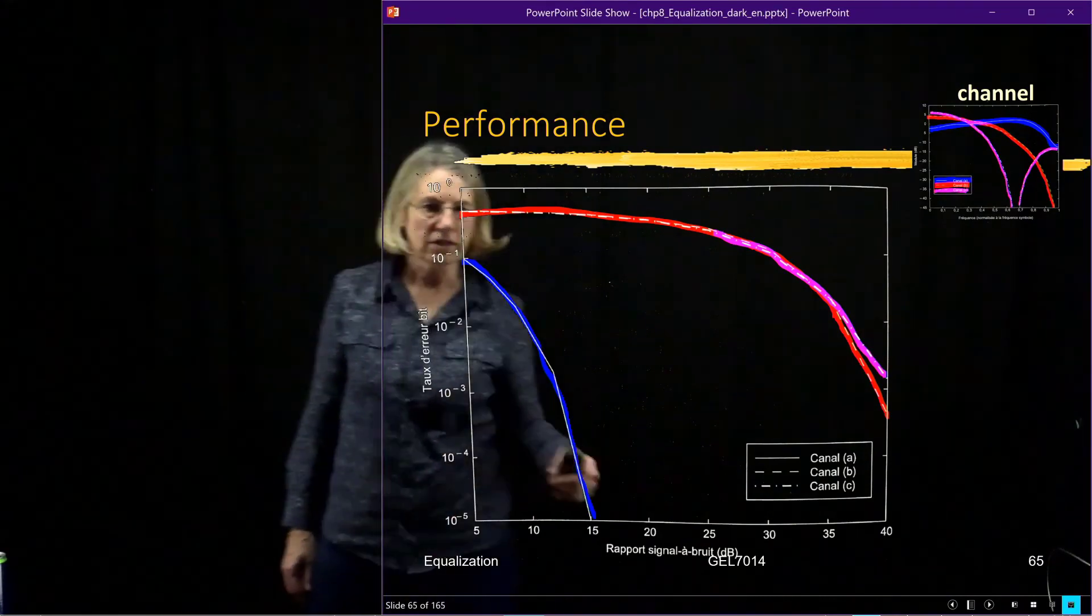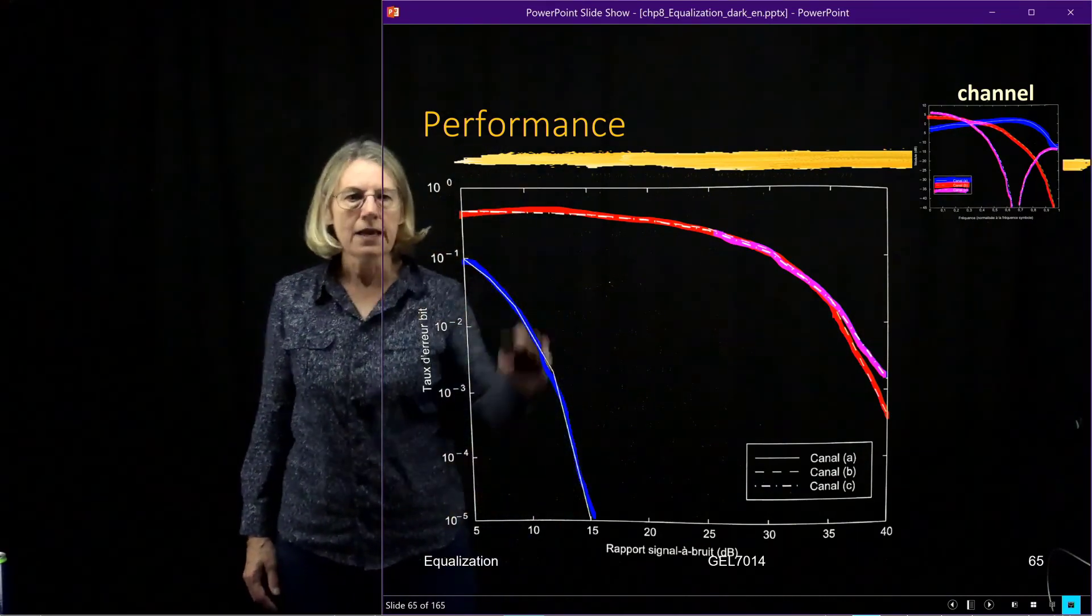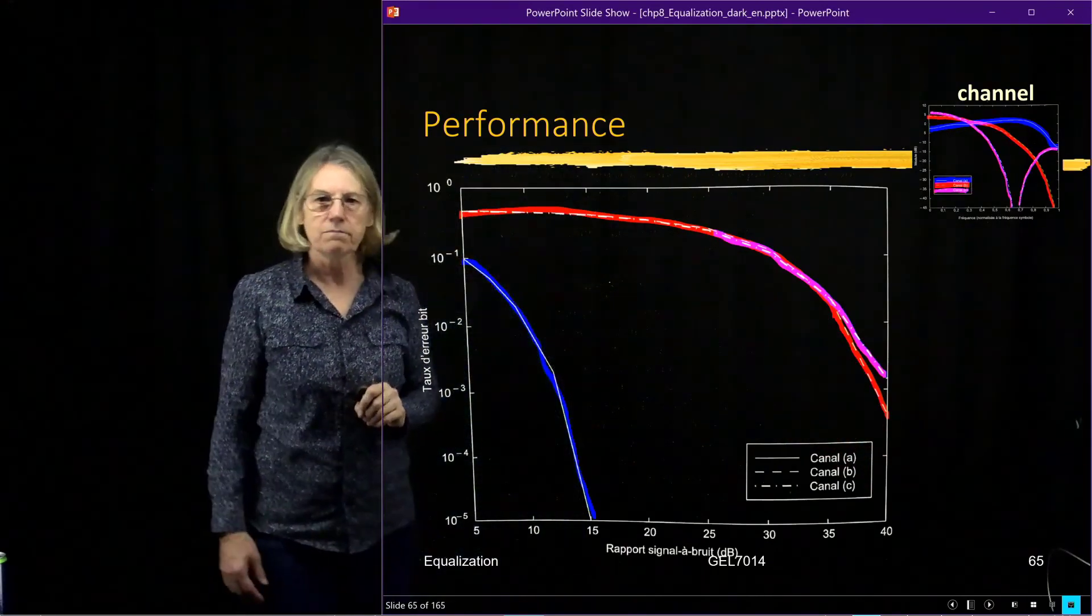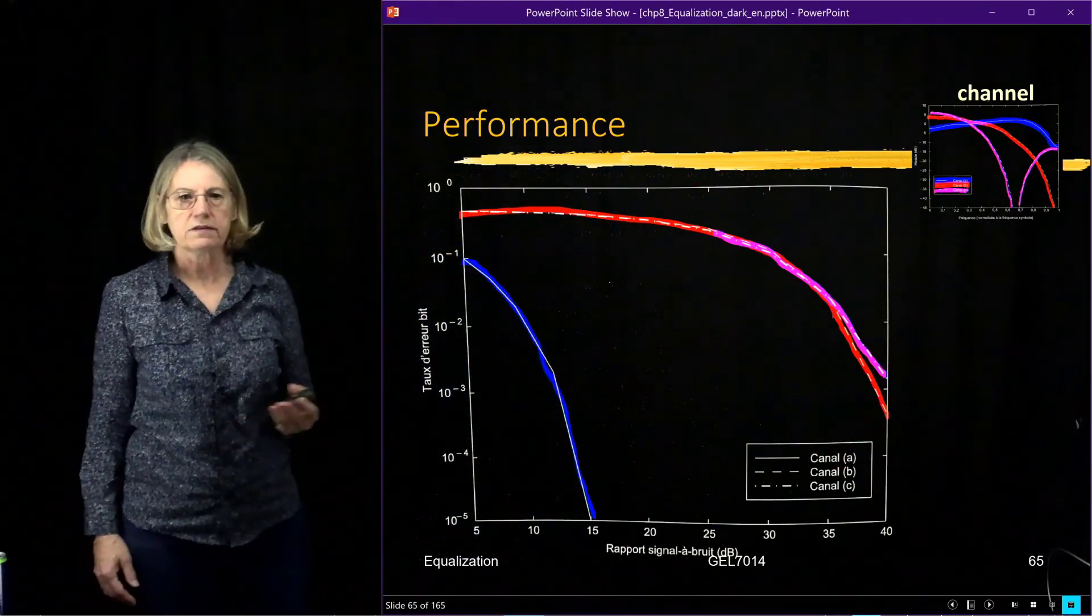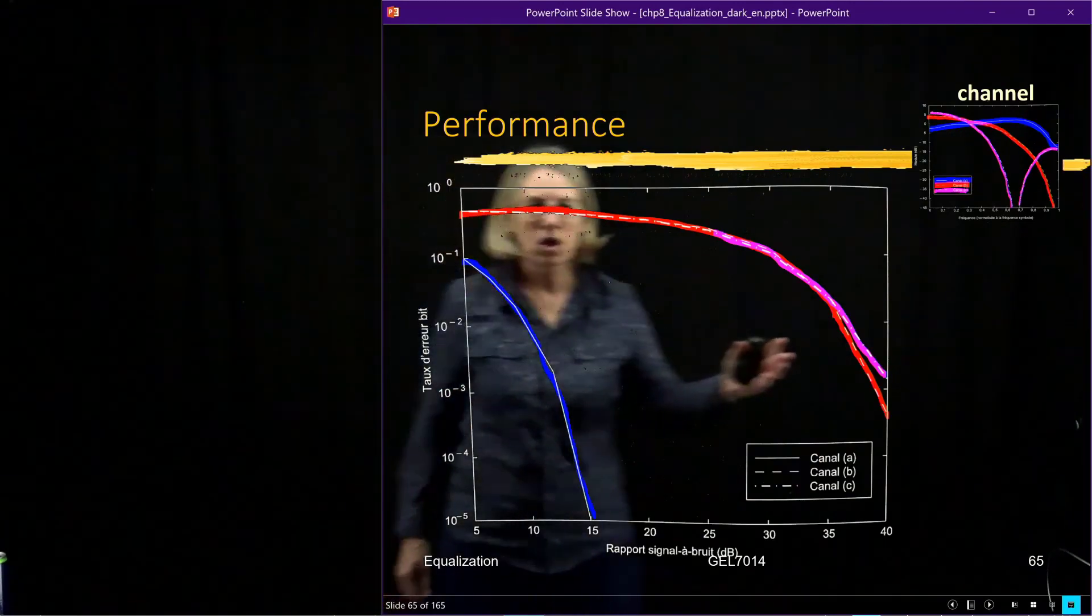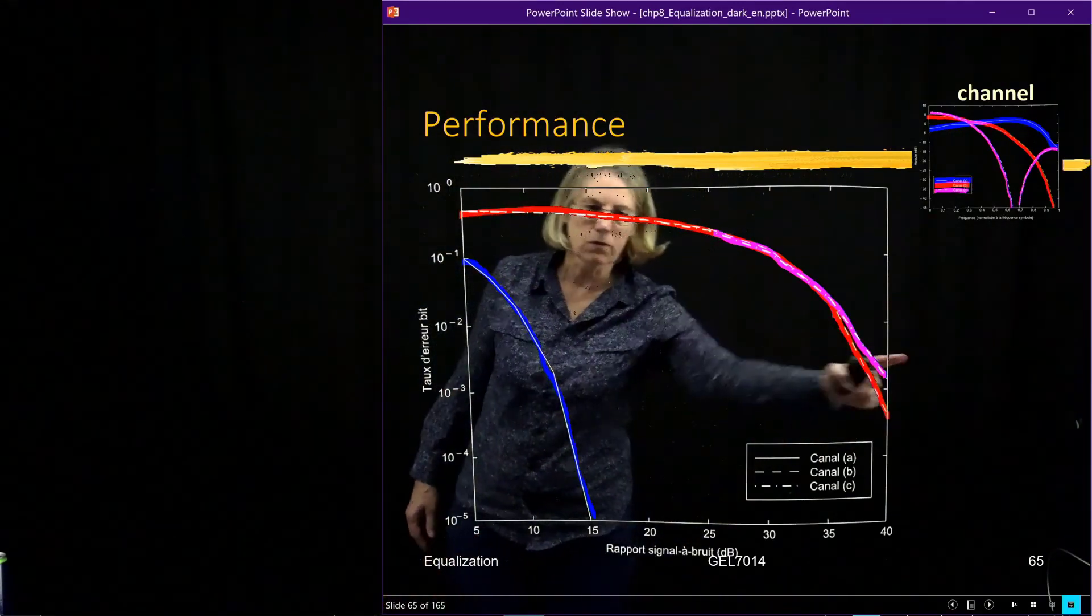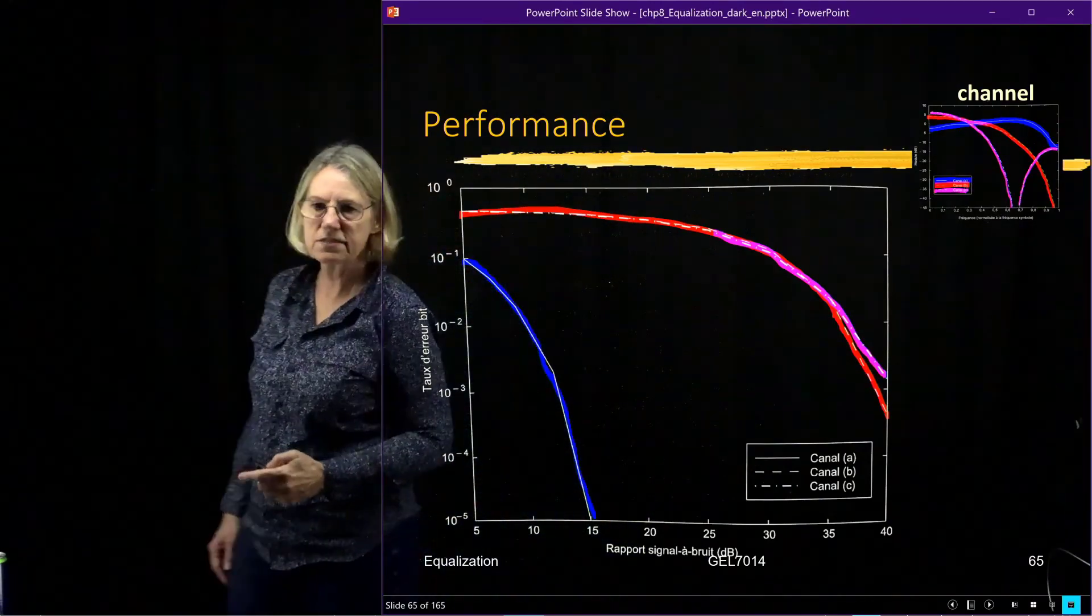But we can see there's a big penalty for both of those channels. It seems like the one with the null at lower frequencies is a little bit worse, but they're both pretty bad. We can see here what the penalty is for these channels.